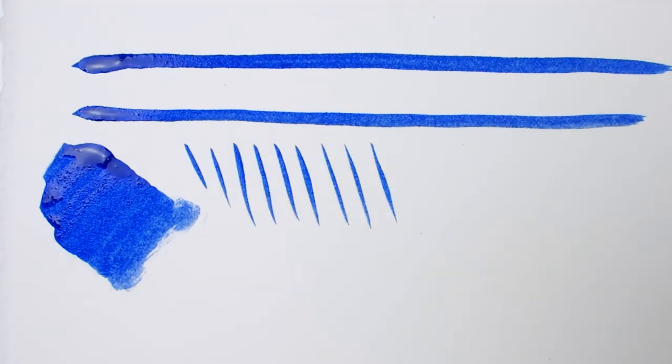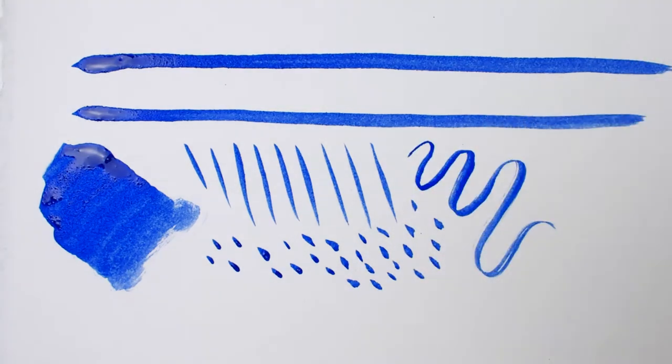Notice the uninterrupted lines you can get from holding so much paint, but we can also get coverage, squiggles, dashes, and dots.